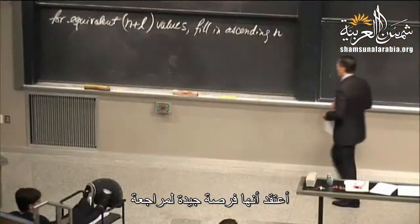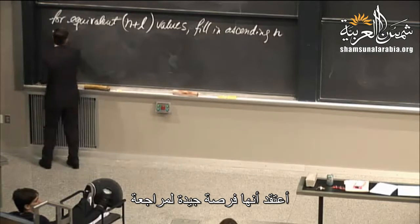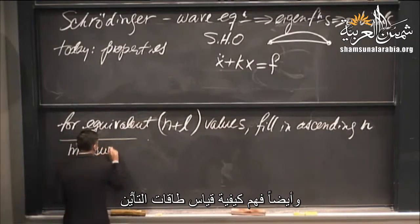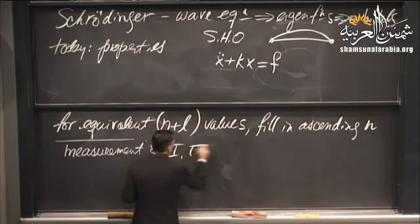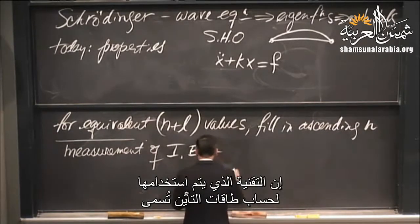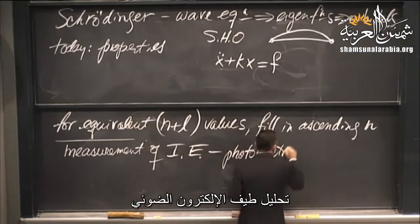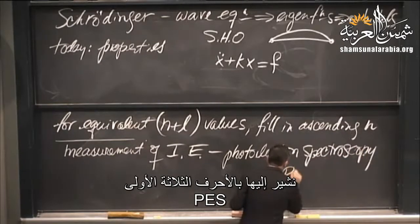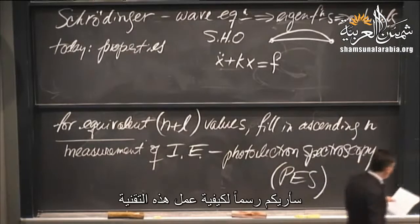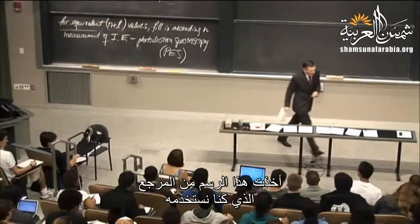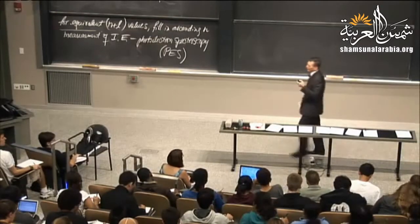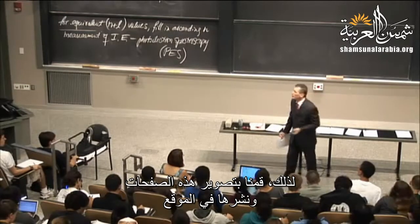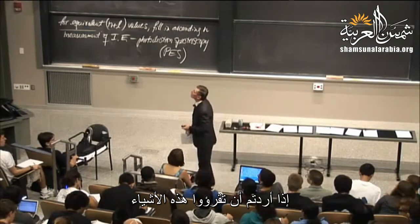How do we measure these ionization energy values? The technique is called photoelectron spectroscopy, or PES. I want to show a cartoon of how this works — taken from the text we used to use, scanned and posted on the website.